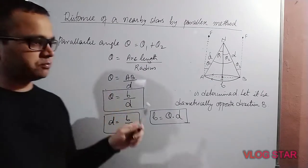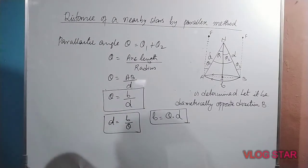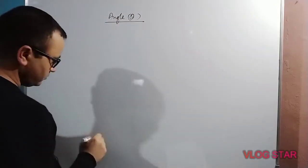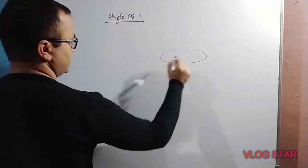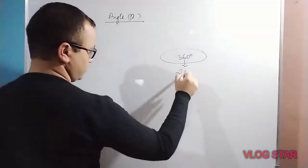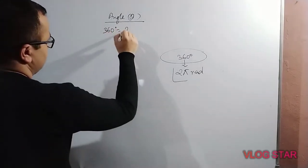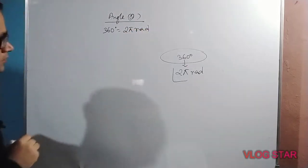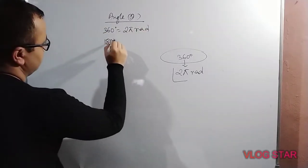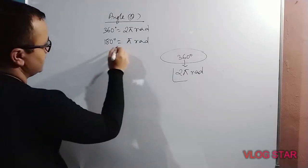Before going to the calculation part, we must know something about the angle theta. A complete revolution is 360 degrees. In terms of radians, 360 degrees equals 2 pi radians. Dividing by 2, 180 degrees equals pi radians.